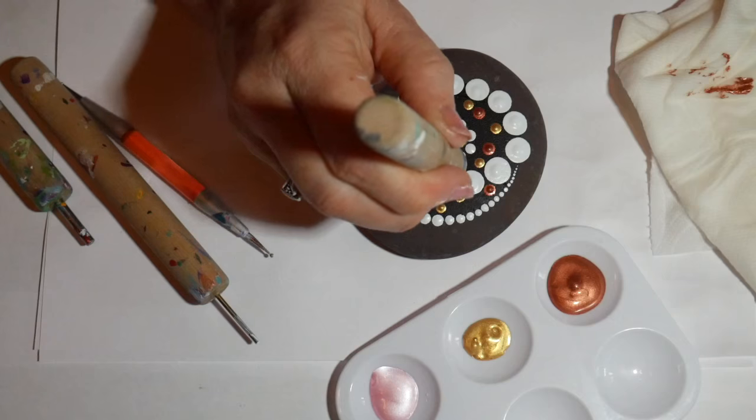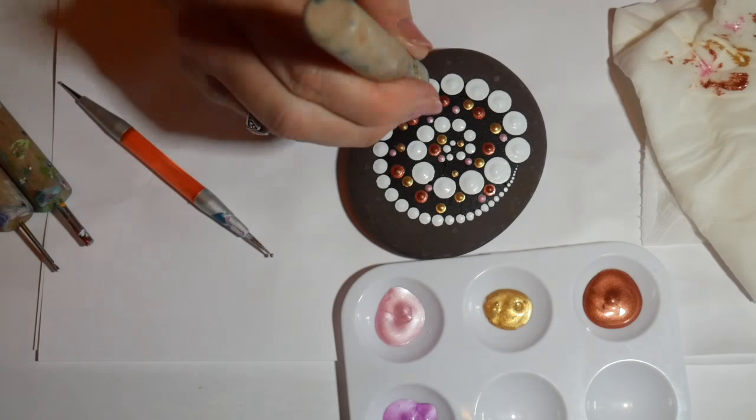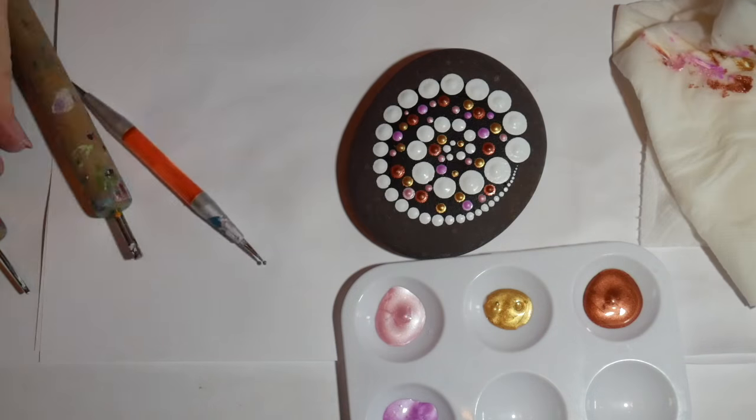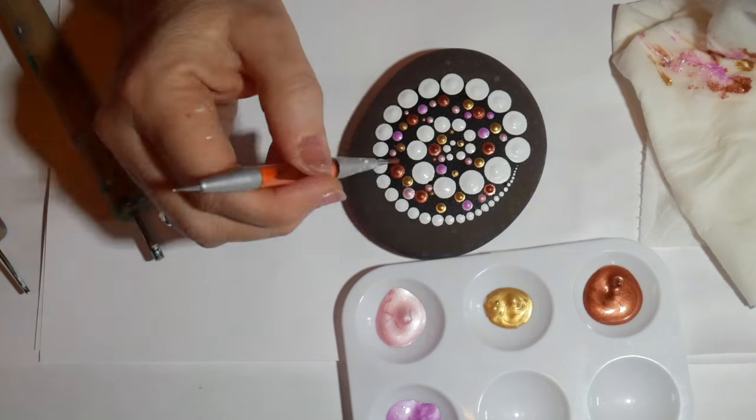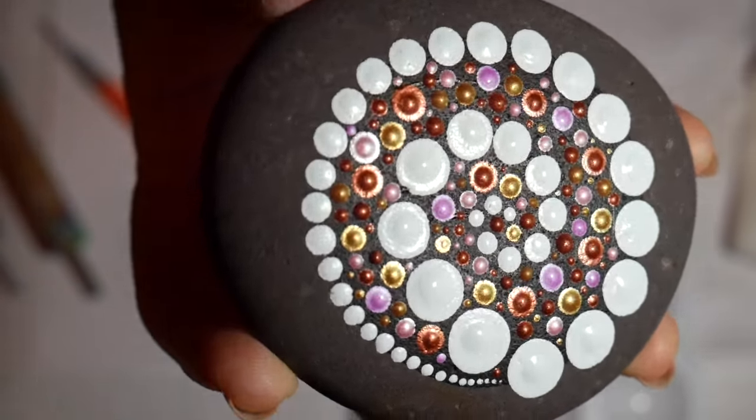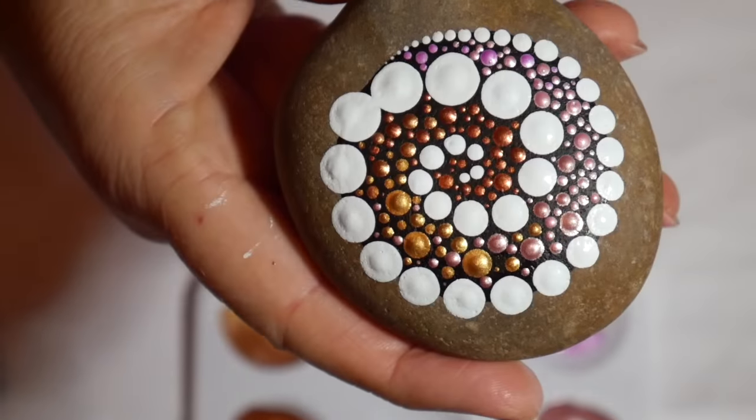And then I moved on to some gold, and then a couple different shades of pink. I used four different tools just making all sorts of different sizes of dots. You want a lot of variety, and you want to just keep filling in and filling in until all those spaces are full.